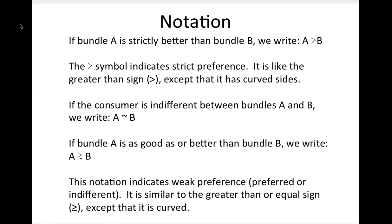Another interesting case is perfect complements — goods you typically consume together, like hot dogs and buns. I always like to eat one hot dog with one bun, so that combination is a point on my indifference curve. If I have one hot dog but two, three, or four buns, I am no better off — I'm indifferent between those points and one-and-one. Similarly, if I have one bun but two, three, or four hot dogs, I'm no better off either. For perfect complements, the indifference curves are always L-shaped, and the corner of the L shows the consumer's ideal consumption proportion.